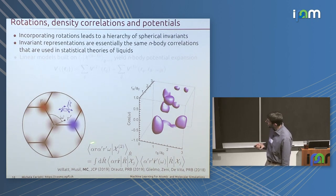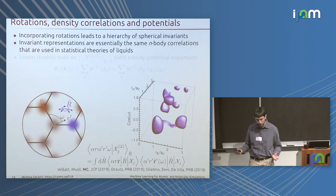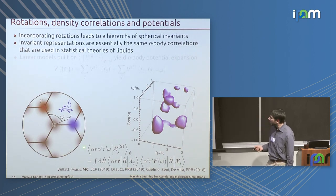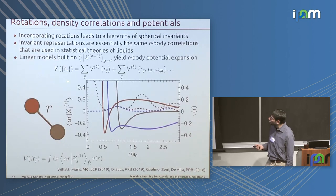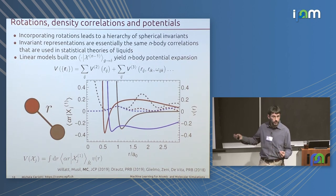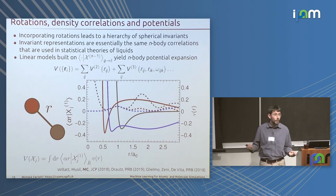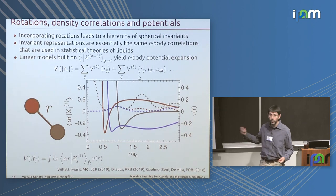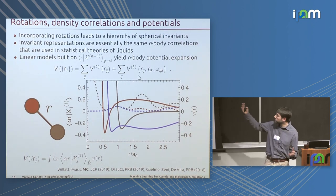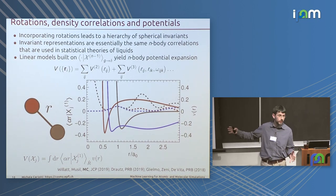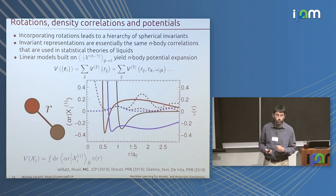Writing these objects as symmetrizations of atom densities is very nice because if you build a linear model from them, you get a body-order decomposition of your property. The term corresponding to the first invariant gives a pair potential; the term corresponding to the three-body invariant gives a three-body potential, and so on. You can really break down the property into a series of terms depending on higher and higher body-order correlations.